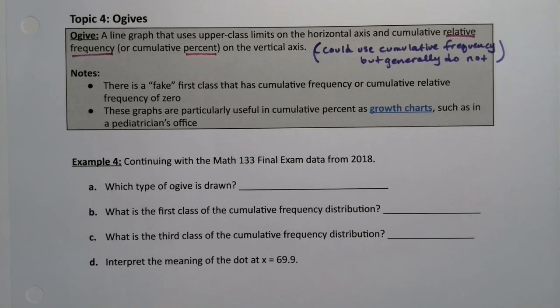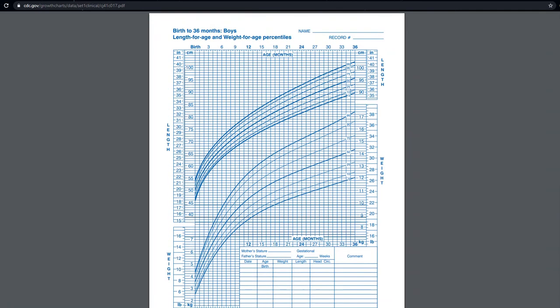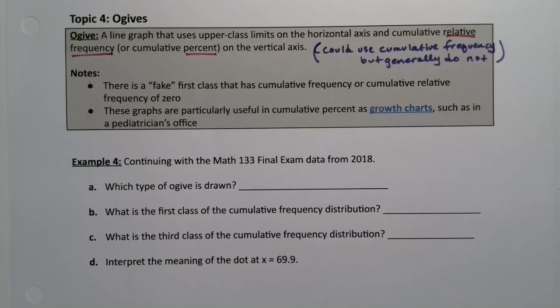So if you've ever seen a growth chart, which I will show you what that looks like. There you go. This one is for birth to 36 months for boys. This is the length for their age and their weight for their age. They're percentile graphs. It doesn't quite look like it. They're ogives, but they're slightly modified ogives. So you'll learn about these in nursing classes if you're going on in nursing, for example. And of course, if you have children, you'll eventually learn about them. But they're basically glorified ogives.